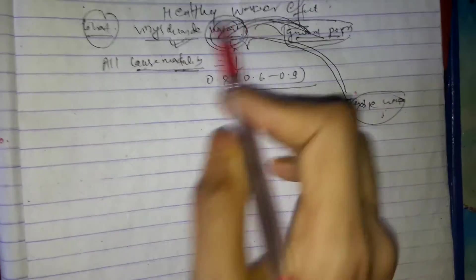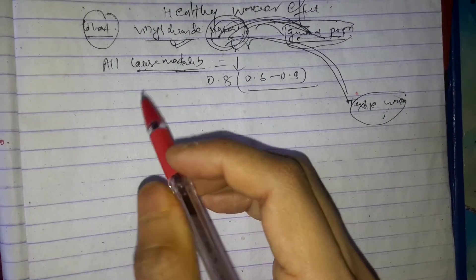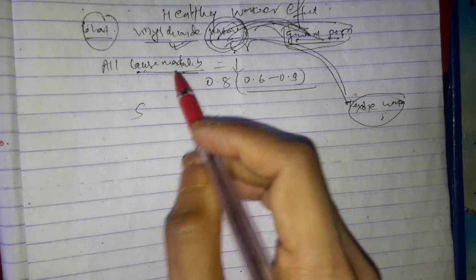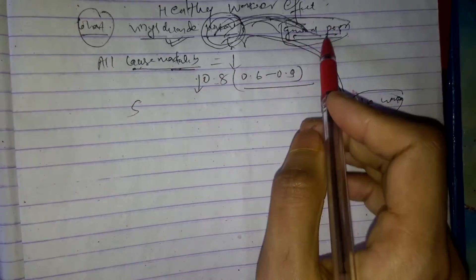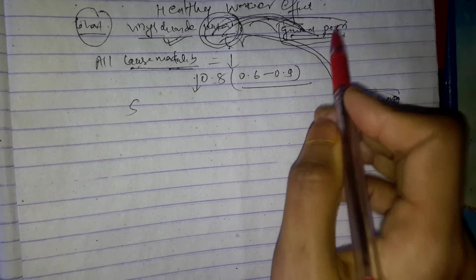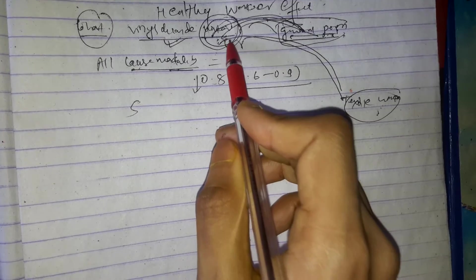See, this is healthy worker effect because workers are generally healthy. Workers are employed if screening is done and if they are found to be healthy then they are employed. That's why this is found to be decreased because in this population there are unhealthy population as well and healthy population as well, but here the sample includes only healthy ones.